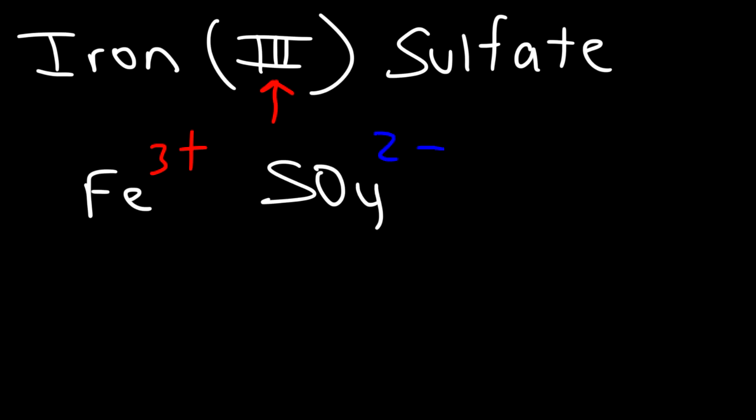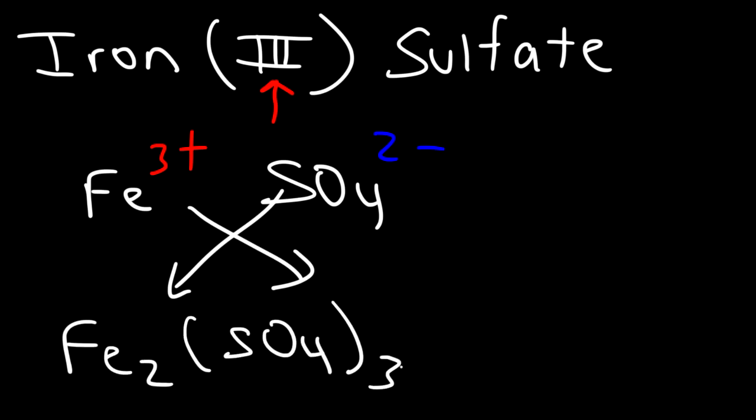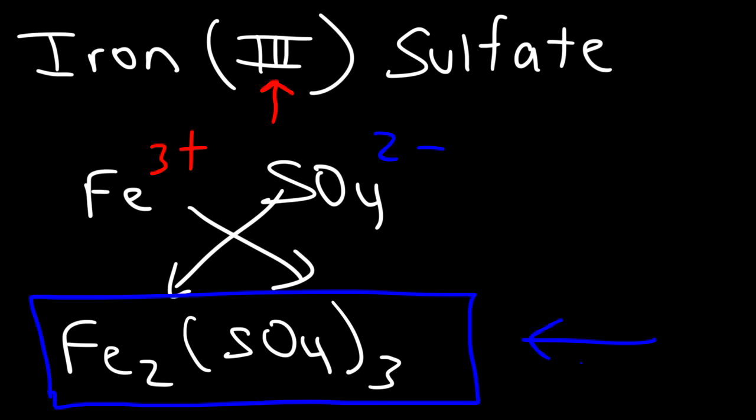So with this information, we can swap the charges with the subscripts. So it's going to be Fe2(SO4)3. And that's basically it. So now you know how to write the chemical formula of ionic compounds. Thanks again for watching.